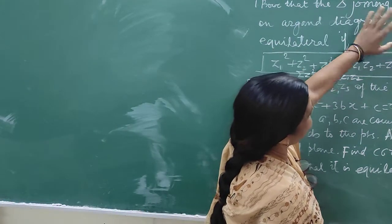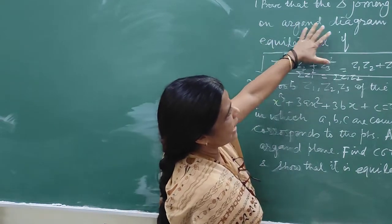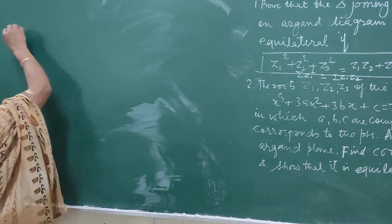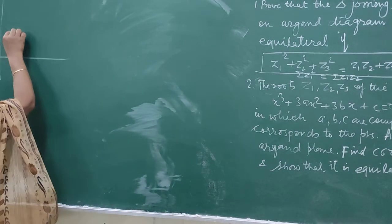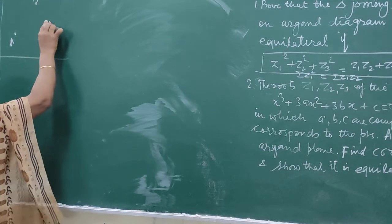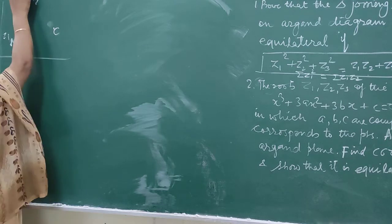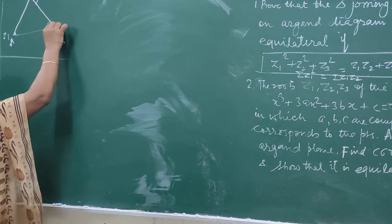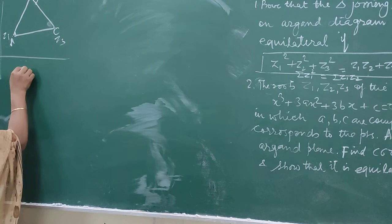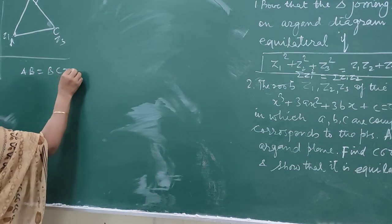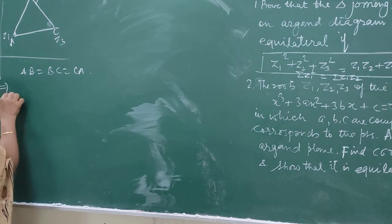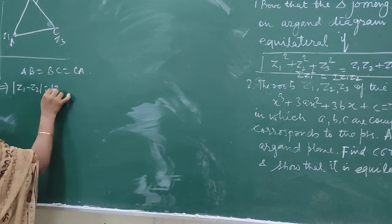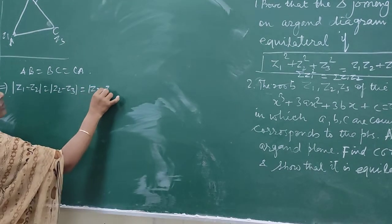Today's problem is that the triangle joining Z1, Z2, Z3 on the Argand diagram is equilateral if a certain condition is satisfied. Let this be the Argand plane. A, B, C are three points denoted by Z1, Z2, and Z3. This triangle is equilateral if AB equals BC equals CA. In complex number terms, AB is |Z1 minus Z2|, so |Z1 minus Z2| = |Z2 minus Z3| = |Z3 minus Z1|.